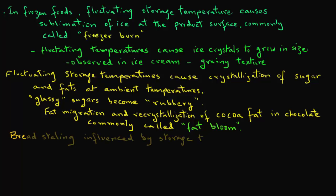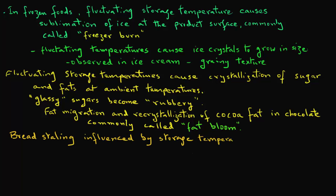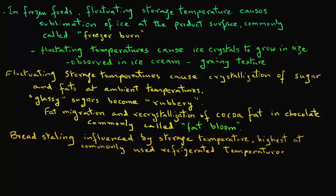Bread staling, which is due to starch retrogradation caused by storage temperature, is highest at commonly used refrigerated temperatures. Therefore, it is usually advisable to store bread under sub-freezing temperatures, where starch retrogradation is very slow.